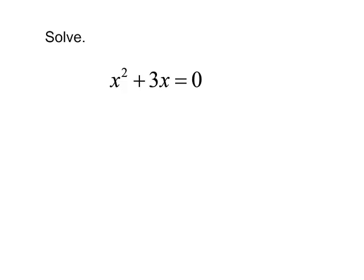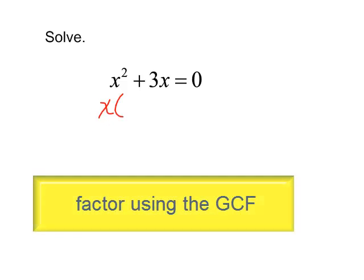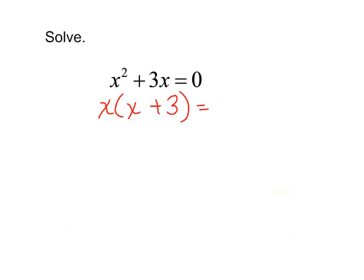Well, let's start with the GCF. These terms do have a GCF of x. I will pull the x out, and that will leave x plus 3 in parentheses equals 0. This is an equation. I'm not just factoring. This factoring is part of an equation. So keep pulling down that equals 0.